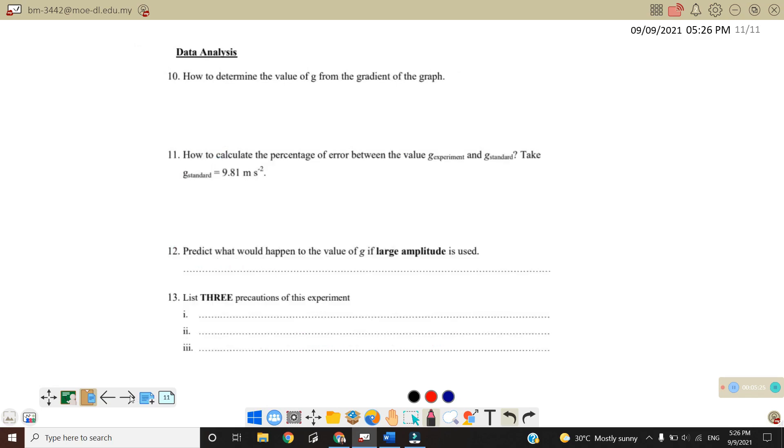Next we will go to data analysis. For data analysis, number 10, how to determine the value of G from the gradient of the graph? So from the equation T equals 2π times the square root of length over G, where we square both sides. So T squared will equal to 4π squared L over G. So if you compare with Y equals MX plus C, meaning that T squared is actually Y axis, and then L is X axis. So meaning that our gradient is equal to 4π squared over G. So how to determine the value of G? We know that M is equal to 4π squared over G. So therefore, G will equal to 4π squared over the gradient.